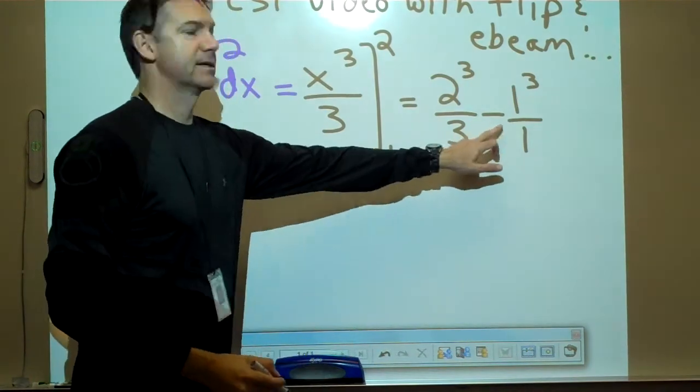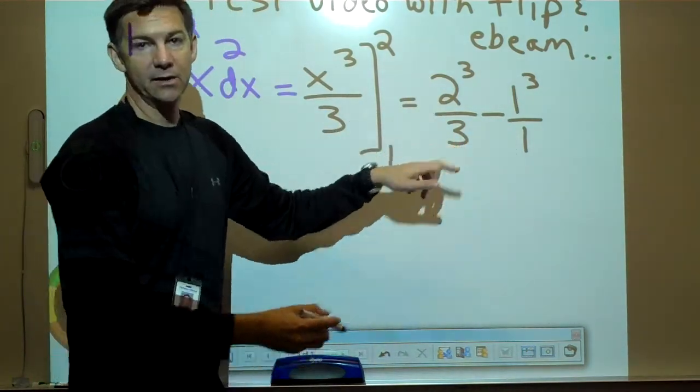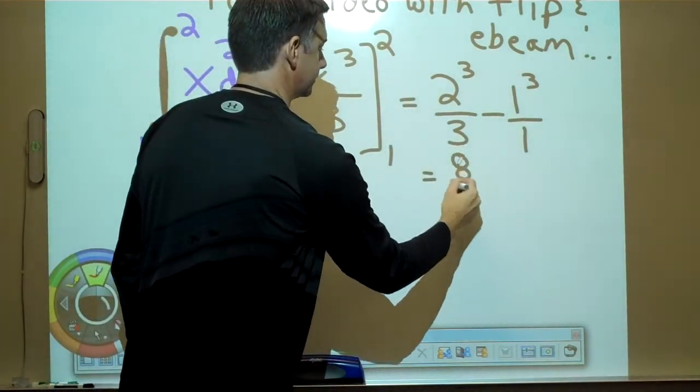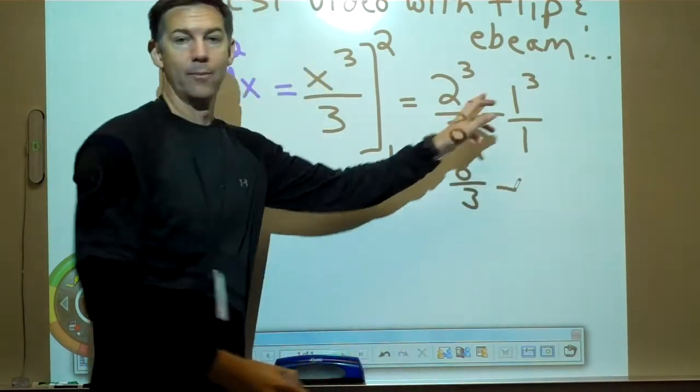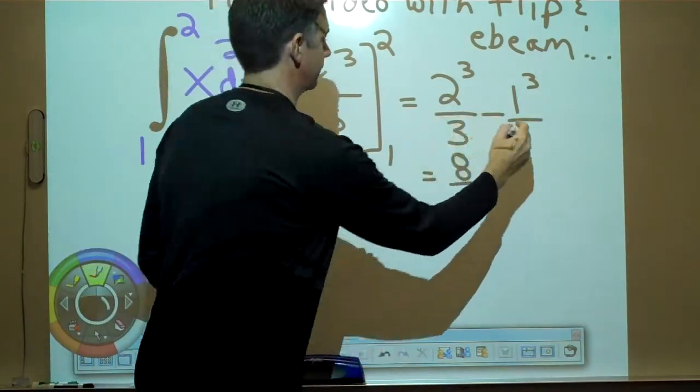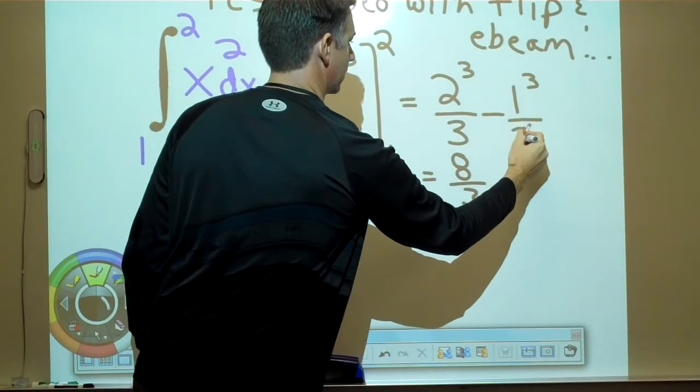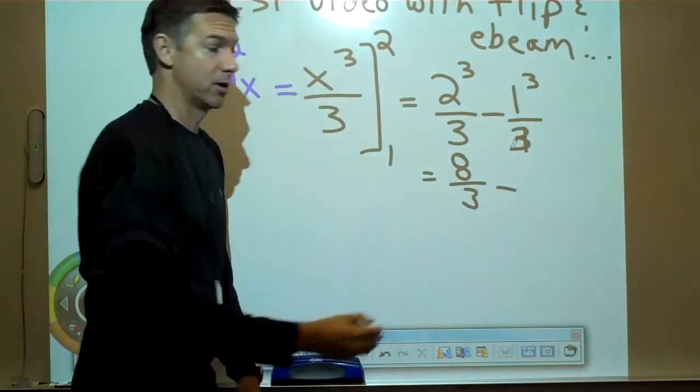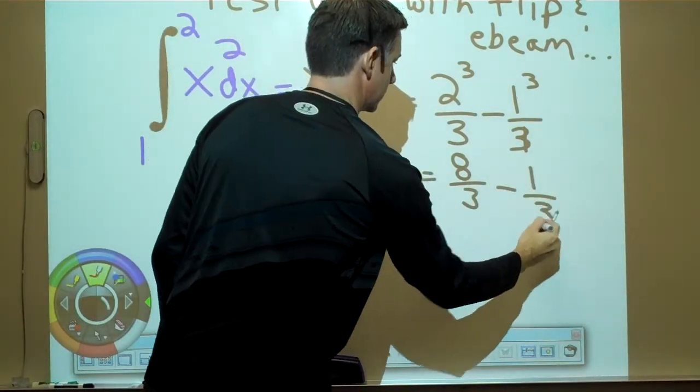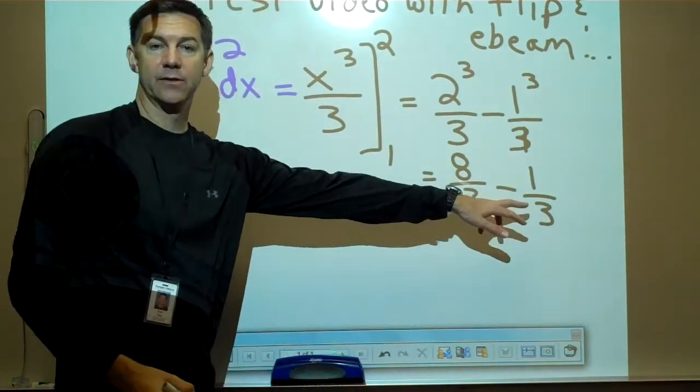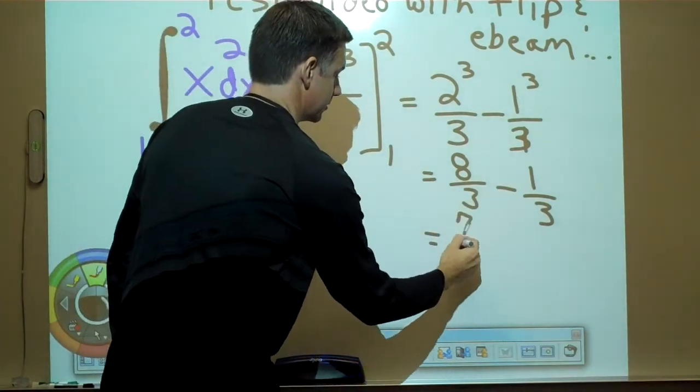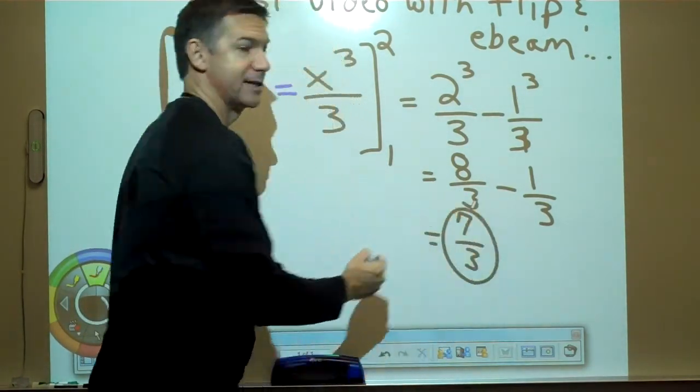It's always a minus in the middle. So it's 8 thirds minus 1 third, and 8 thirds minus 1 third is 7 thirds.